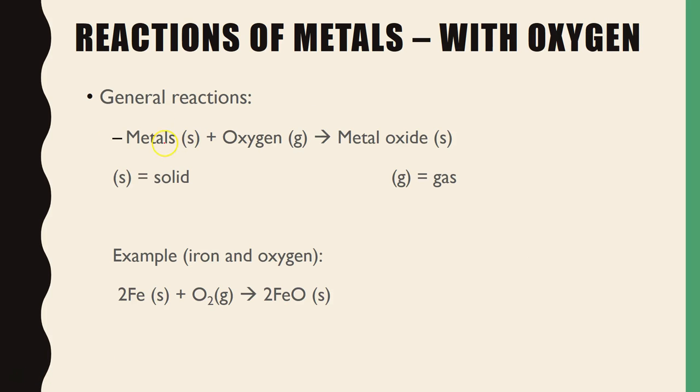The final one here, we have a reaction of metals with oxygen. So the metals are solid plus oxygen forms metal oxides. An example of that would be iron plus oxygen forms iron oxide. So there's the oxide component and there's the metal component. And this is how it reacts with metals.